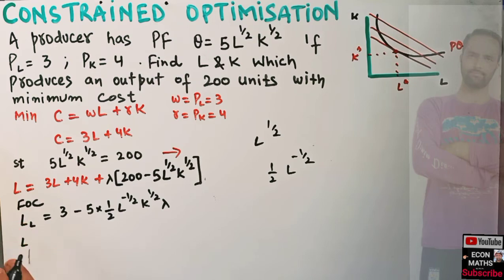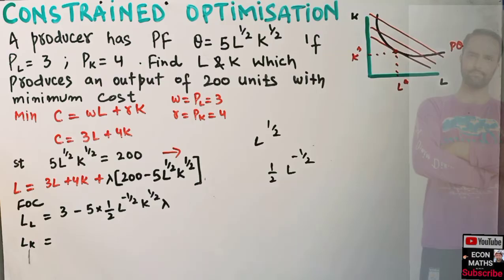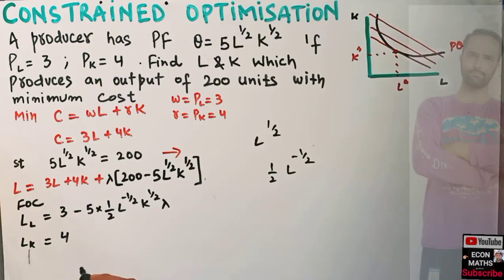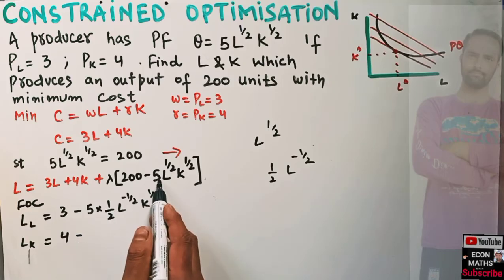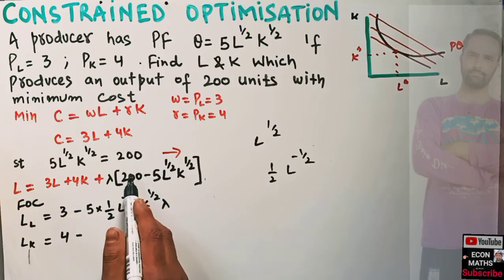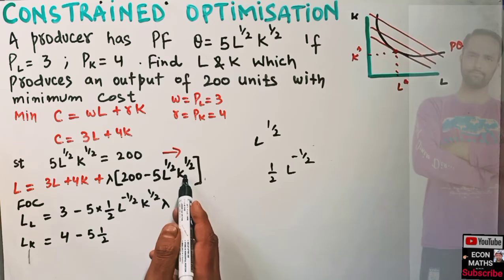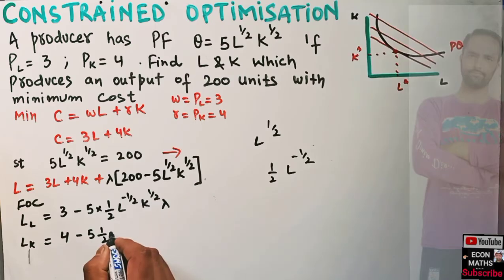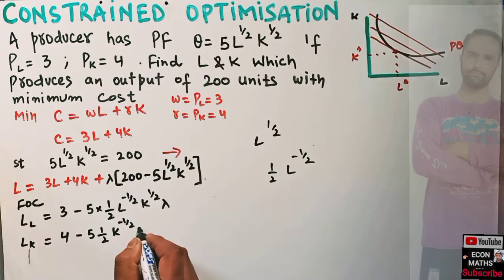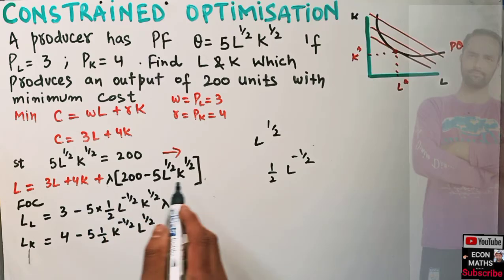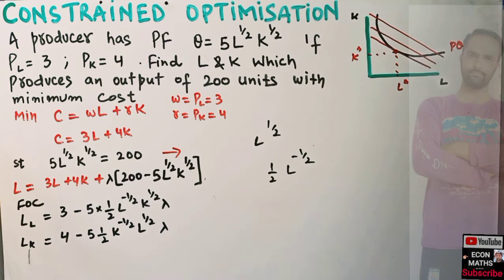Taking the partial derivative of the Lagrangian with respect to capital: the derivative of 4K gives 4, and then we get −λ × (5/2) × K^(−1/2) × L^(1/2). Setting this equal to zero gives us the second equation with lambda.